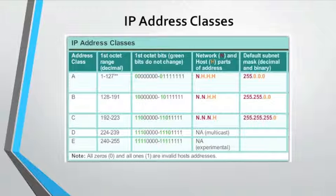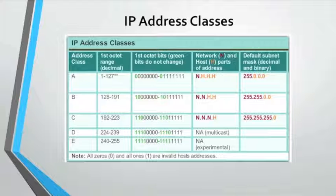Now let's talk about IP address classes. Historically, RFC 1700 grouped the unicast range into specific sizes called Class A, Class B, and Class C addresses. It also defined Class D and Class E as multicast and experimental respectively. The unicast address classes A, B, and C define specific-size networks and specific address blocks. A company or organization was once assigned an entire network from a Class A, B, or C address block. This use of address space is referred to as classful addressing.